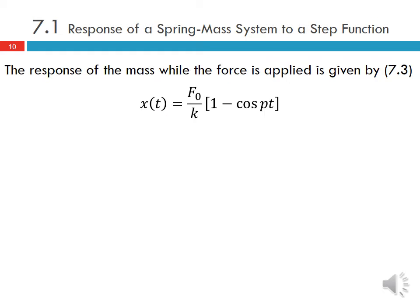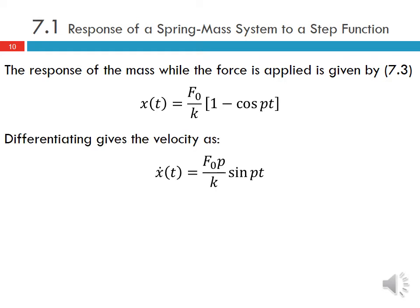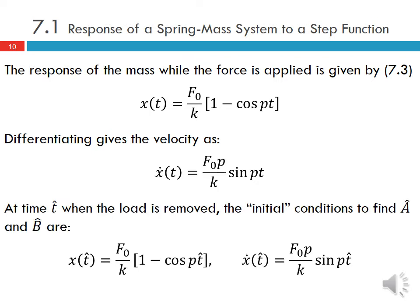The response while the force was applied was F₀/k(1 − cosine(pt)), and the velocity is found by differentiating that expression. At time t-hat when the load is removed, we evaluate the displacement and velocity to find the initial conditions, which let us determine A-hat and B-hat for the free vibration response going forward.